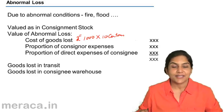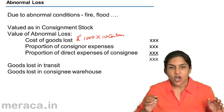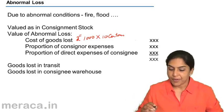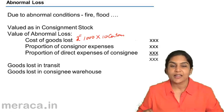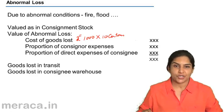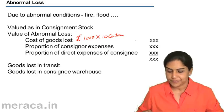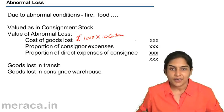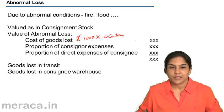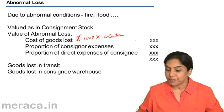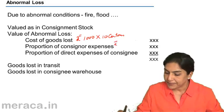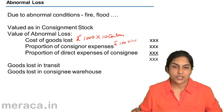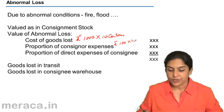Next, we consider the consigner's expenses — that is the cost of sending the goods by the consigner to the consignee. Mukta incurred 10,000 rupees transportation cost for sending 100 cartons. The cost per carton is 10,000 ÷ 100 = 100 rupees per carton. This transport cost is also added to the abnormal loss.